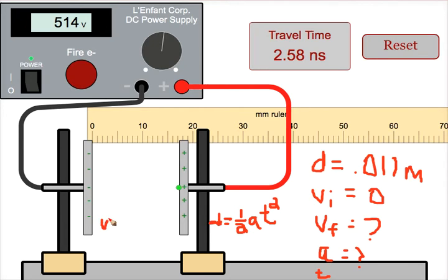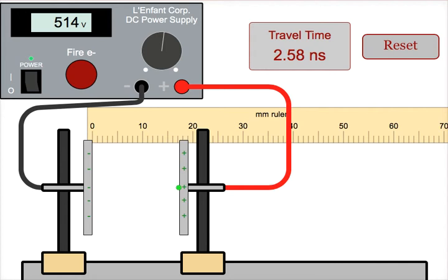So you take the a that you just found and the time to get the final speed of the electron. You can then reset your system and see how different changes to the system are going to affect the speed obtained by the electron.